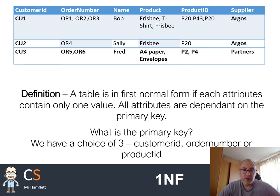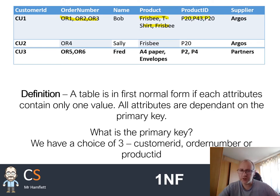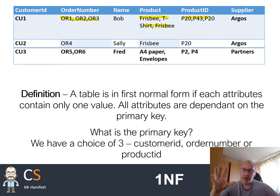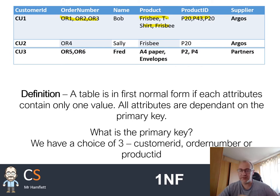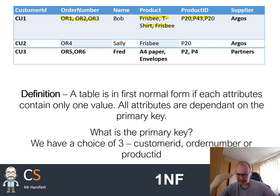Looking at this example, you can see straight away that customer one has three orders inside it, and each of those orders has products and priorities — quite a lot of aggregate data. The idea is each cell in the table contains only one value, and clearly that doesn't hold here, so that's what we need to fix. All attributes must be dependent on the primary key.